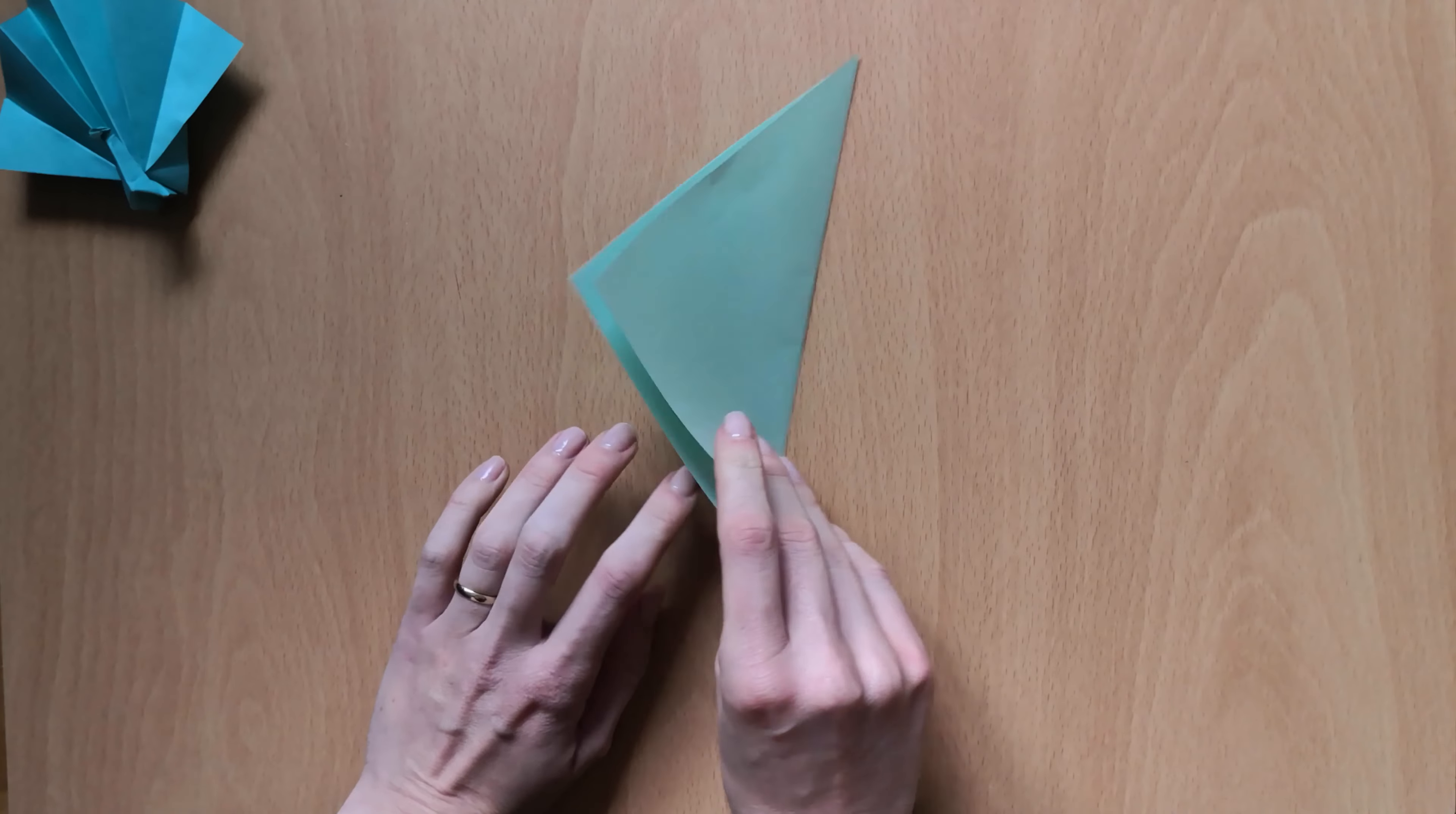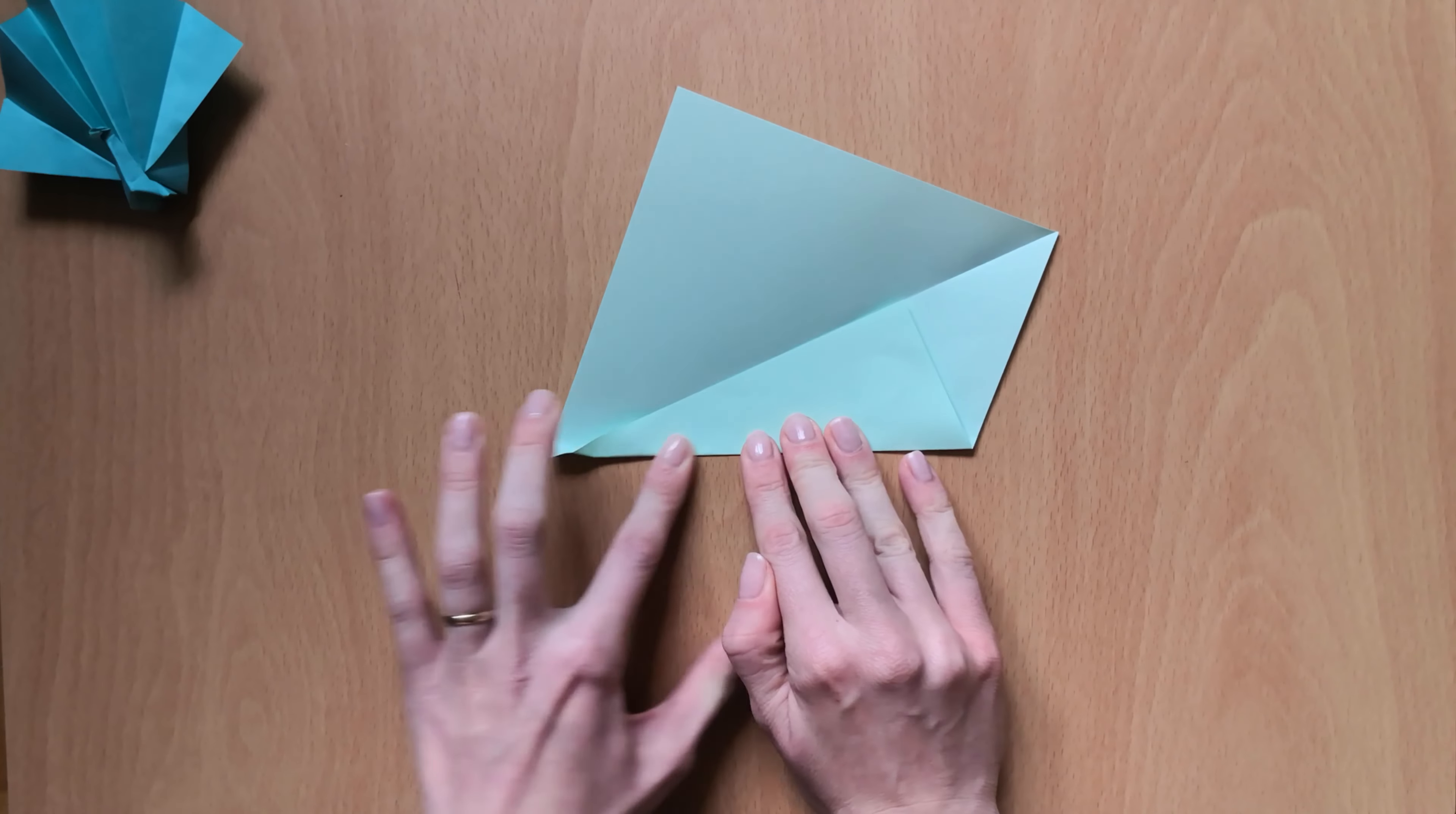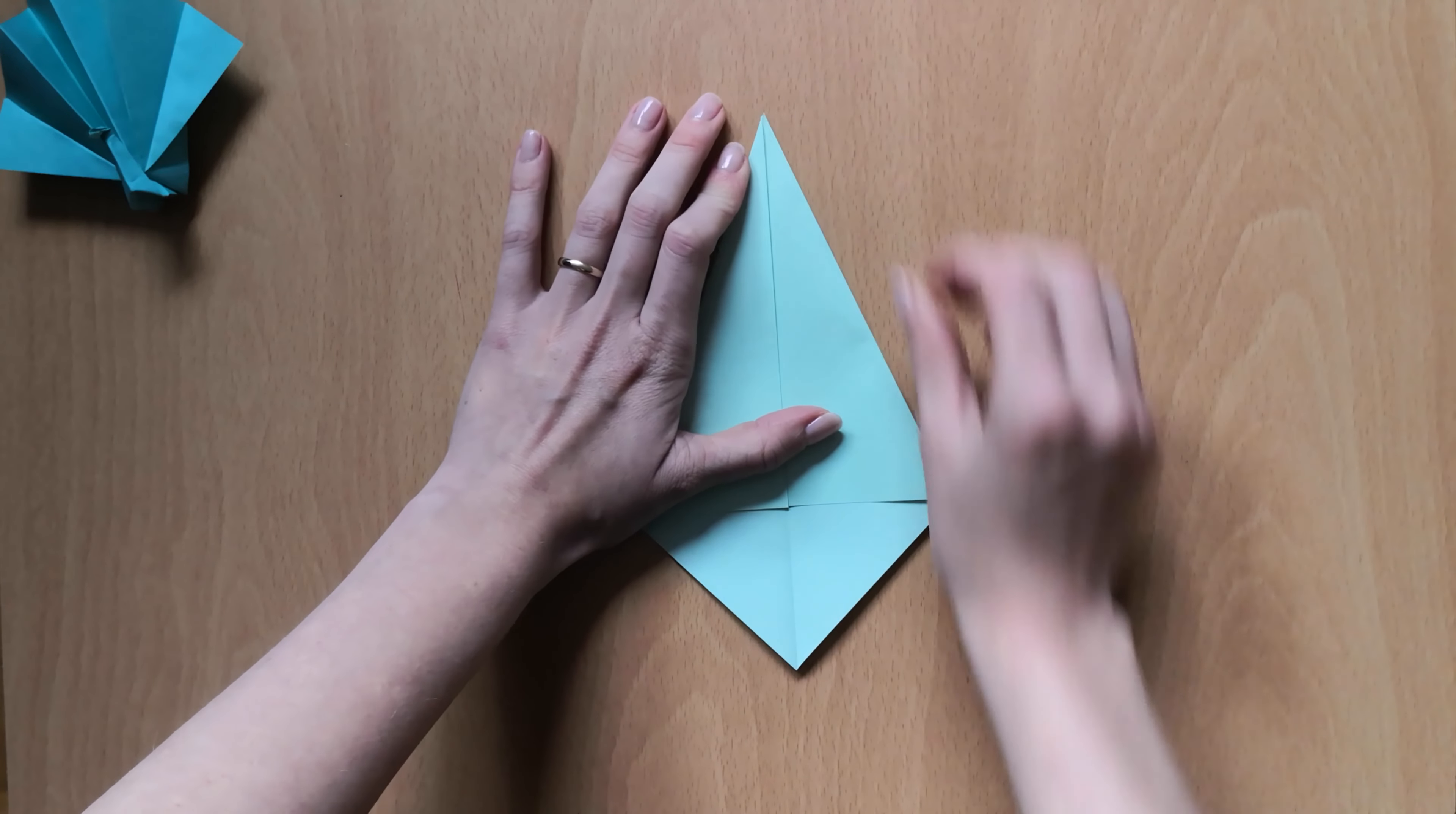Now we'll open it and we'll fold both sides of the paper into the middle line. So I'll bring one side to the middle line and I'll bring the other side. Just like this.